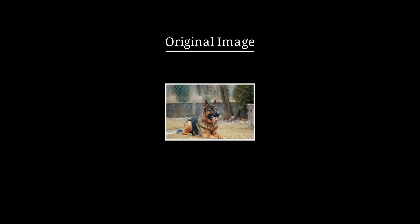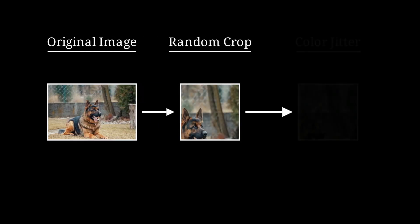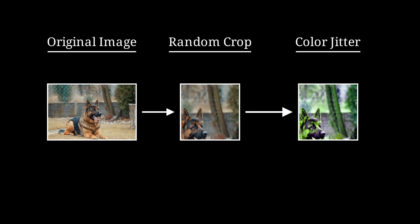In SimCLR, contrastive pairs are created using data augmentation. First, a random crop is applied to the original image, followed by random color distortion that alters brightness, contrast, saturation and hue. These transformations produce two distinct views of the same image, forming the positive pair.